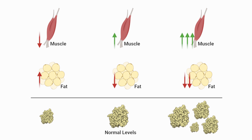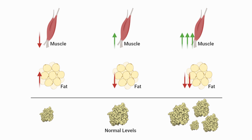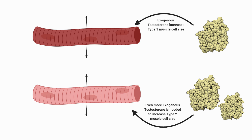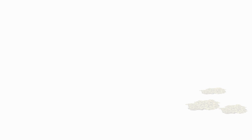Exogenous testosterone intake leading to greater than physiologically normal levels accentuates these effects by increasing muscle mass, strength, and reduces body fatness. But how? It seems that with testosterone intake, muscle fibers increase in size, with the greatest effect in type 1 fibers, as they can hypertrophy up to 50%. Type 2 fibers can also increase, but typically increase more dramatically at even higher testosterone levels, as opposed to type 1, which will hypertrophy at lower, but still superphysiological, levels of testosterone.